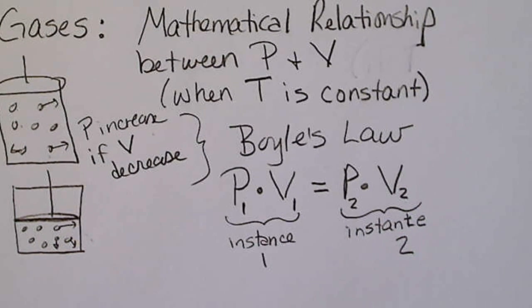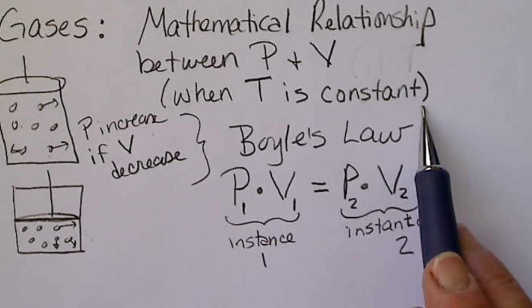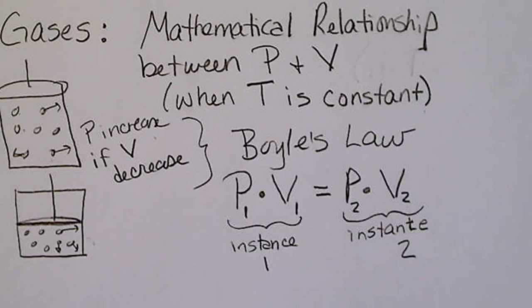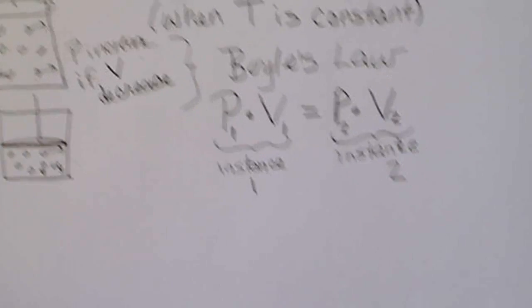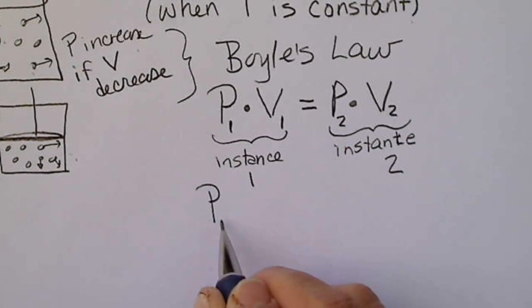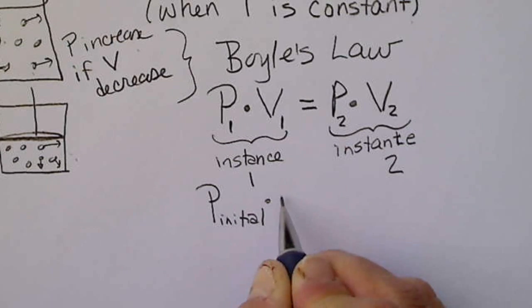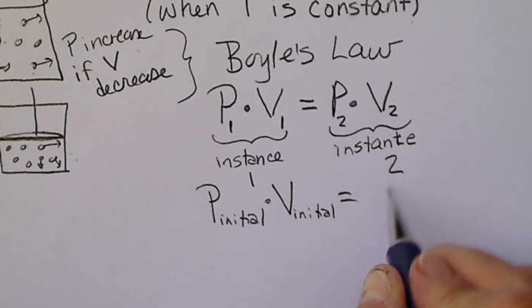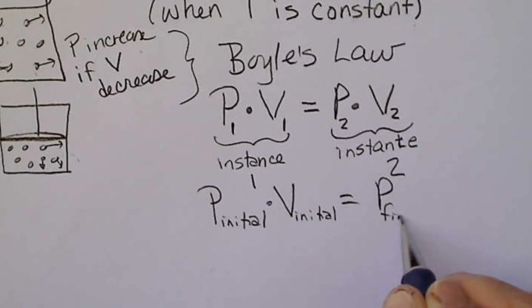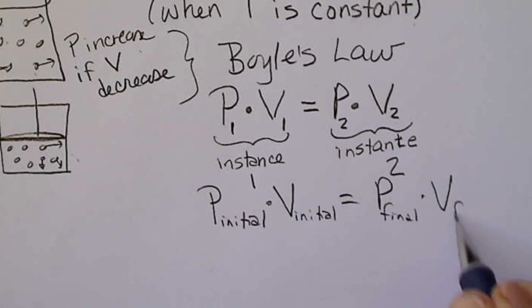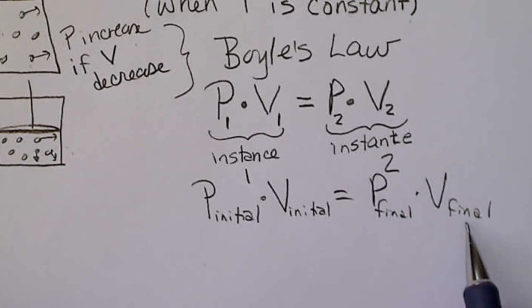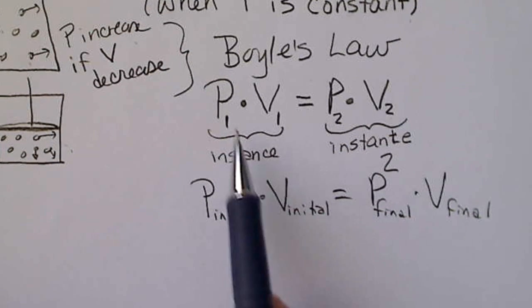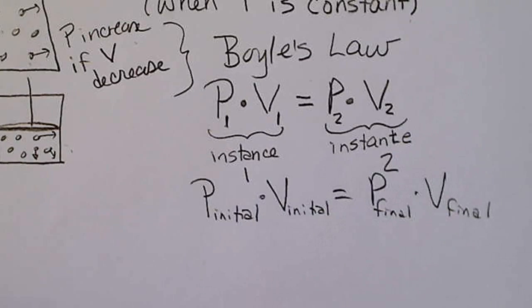And this mathematical relationship is true as long as the temperature doesn't change. This is referred to as one of the simple gas laws. Another way of thinking about Boyle's Law is P initial conditions times V initial conditions equals P final times V final. It's a little cumbersome to keep writing all that stuff out, so generally we don't do that. We just take a shortcut and say P1V1 equals P2V2.